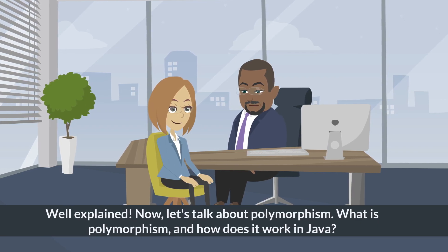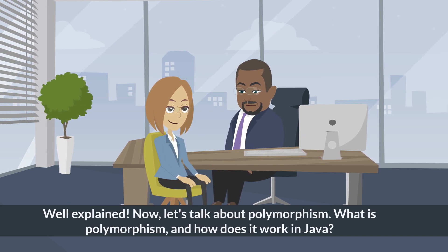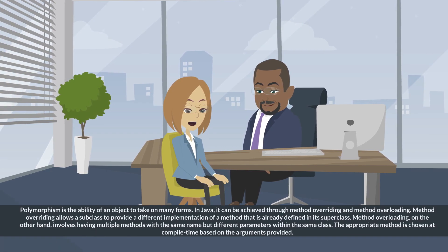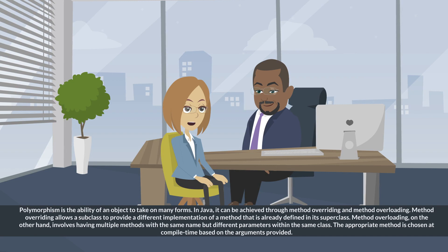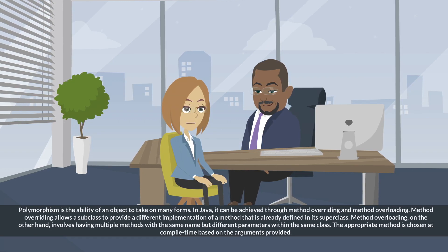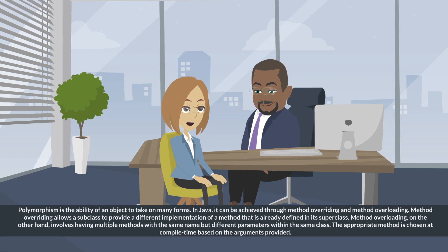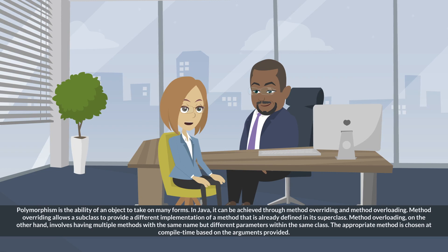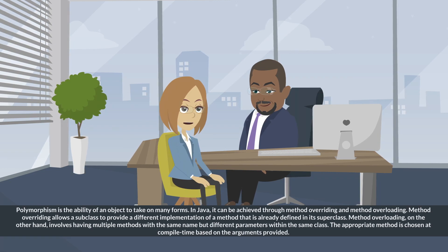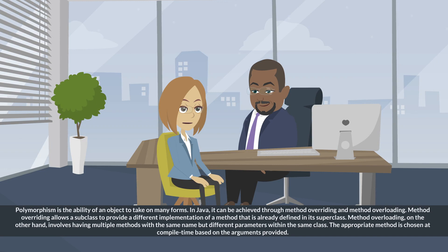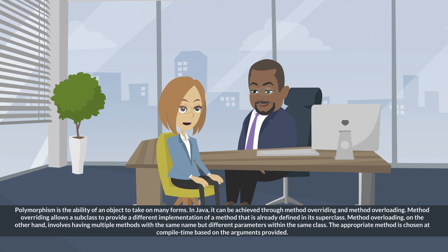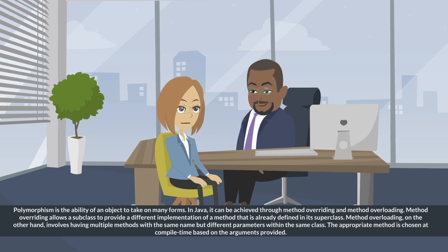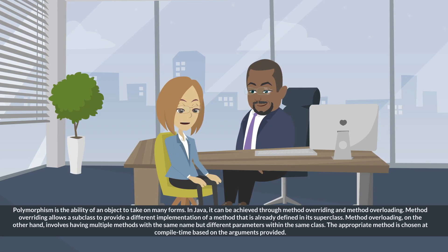Well explained. Now, let's talk about polymorphism. What is polymorphism and how does it work in Java? Polymorphism is the ability of an object to take on many forms. In Java, it can be achieved through method overriding and method overloading. Method overriding allows a subclass to provide a different implementation of a method that is already defined in its superclass. Method overloading, on the other hand, involves having multiple methods with the same name but different parameters within the same class. The appropriate method is chosen at compile time based on the arguments provided.